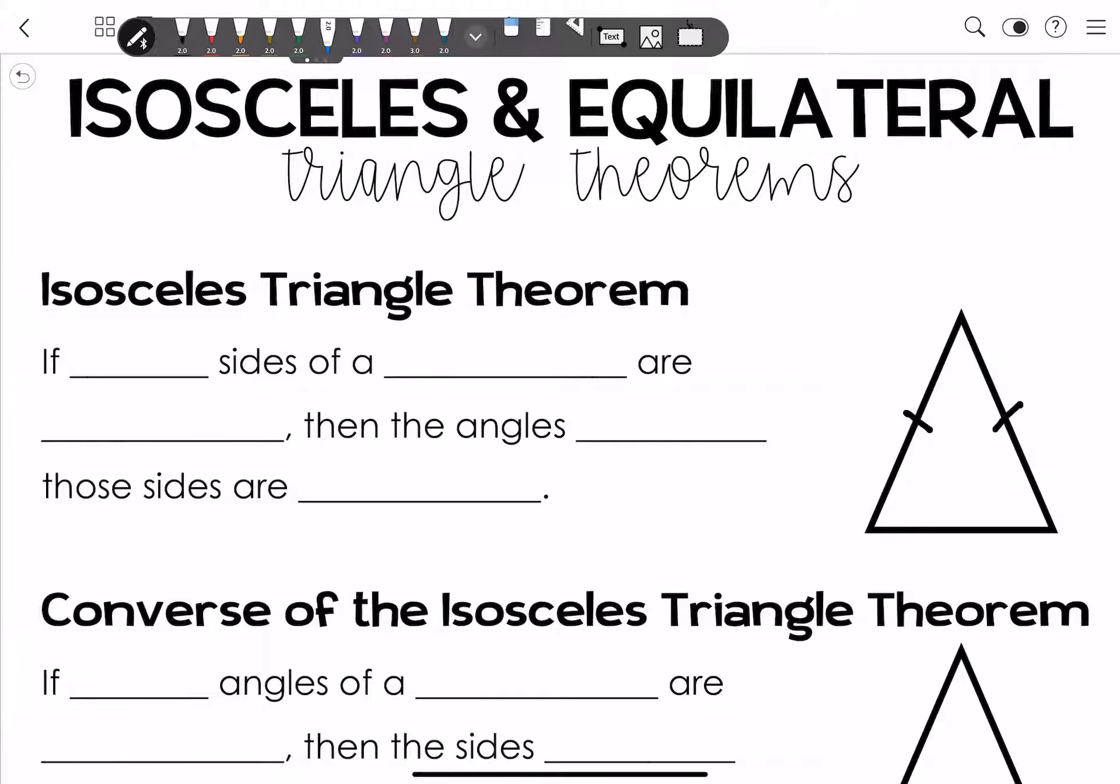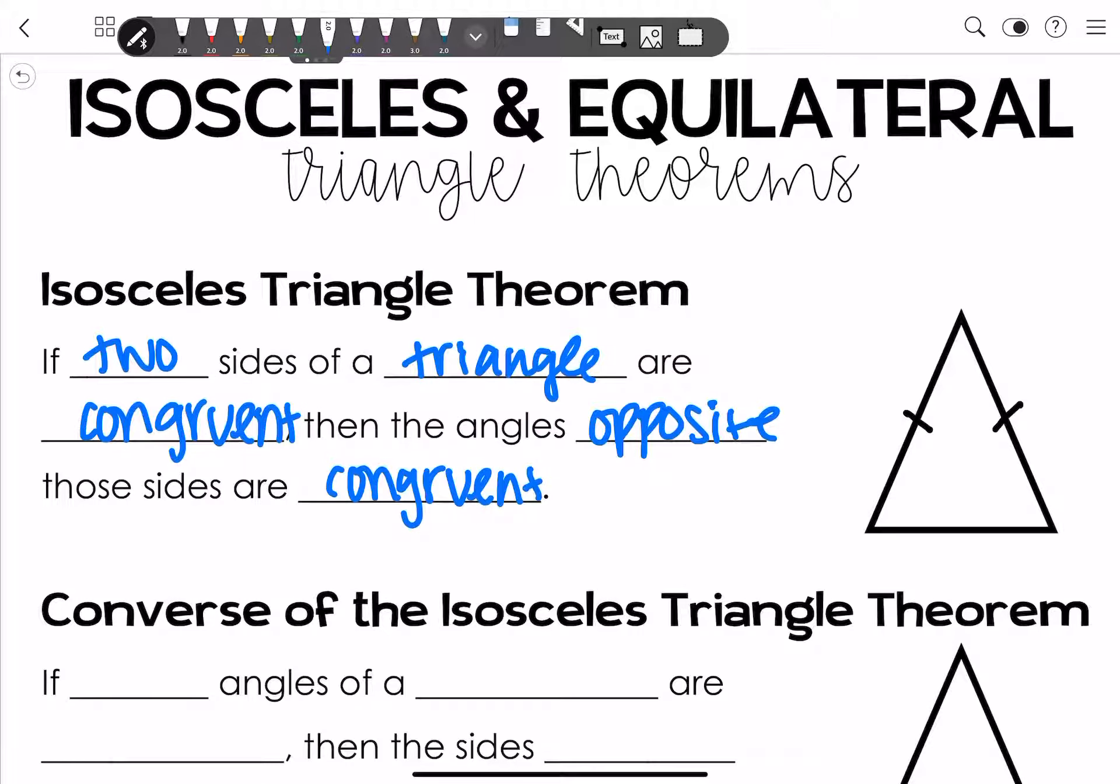Isosceles and equilateral triangle theorems. The first one is the isosceles triangle theorem. If two sides of a triangle are congruent, then the angles opposite those sides are congruent. Pretty much because we know this one is an isosceles triangle, this angle right here is opposite to this side, so it's congruent with this other one that is opposite to its congruent side. That's why I made you guys put in those tick marks.